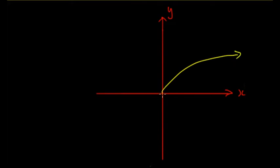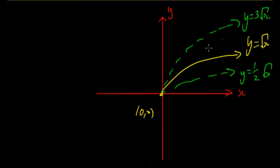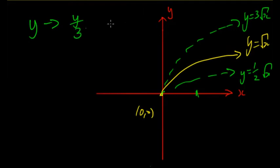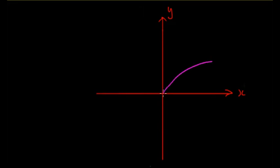Looking at dilations: starting with the general shape at zero zero with y equals the square root of x, you can see that y equals three times the square root of x and y equals two times the square root of x stretch the graph — y is simply greater at each x point. This is a dilation from the x-axis, parallel to the y-axis. Replacing y with y over a, for example y over one-half equals two y, scales the graph accordingly.